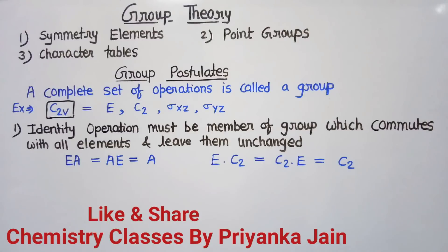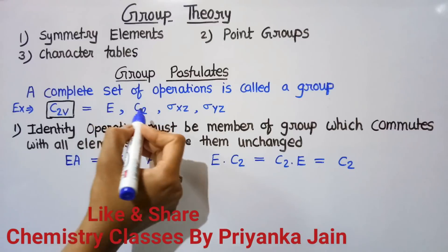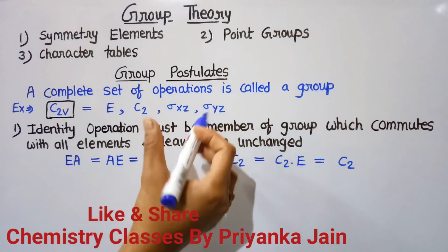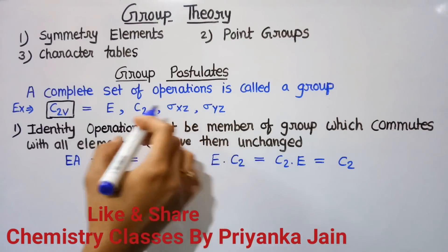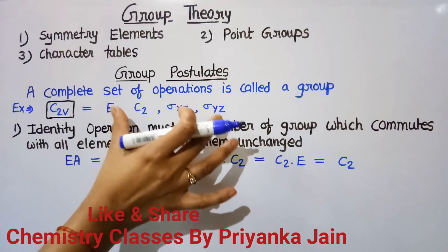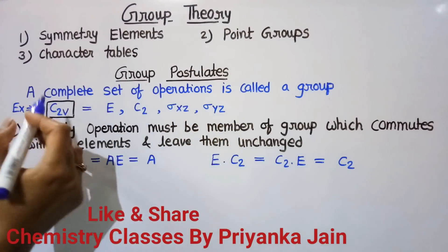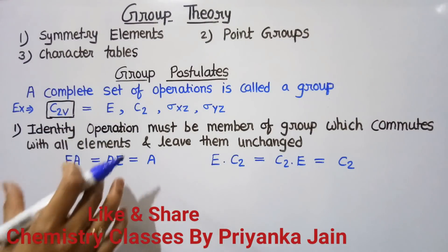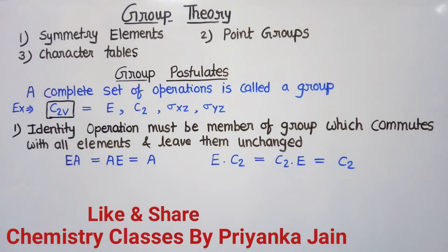In the water molecule, the C2v point group is present, meaning there are four basic symmetry elements: one is identity, another is the C2 axis, the third is the σ(xz) plane, and the fourth is the σ(yz) plane. These four elements make a complete group that is called the C2v point group. There is a certain criteria that a group should obey, and there are five group postulates.